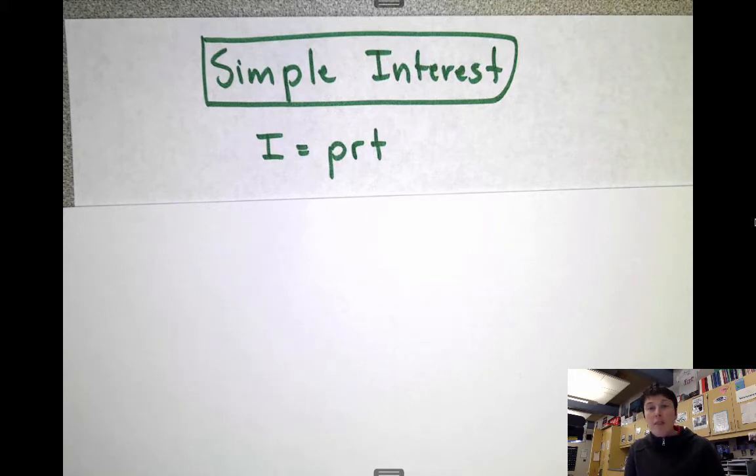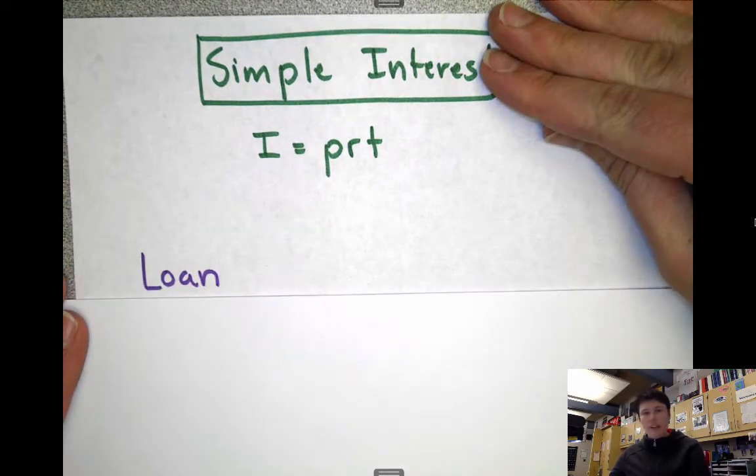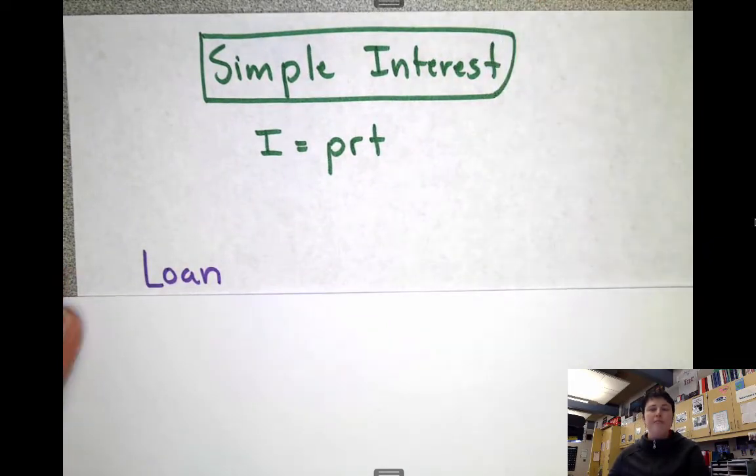But today I want to talk about loans, what a loan is. A loan is different than having a bank account. So we're going to write that word down, loan. What a loan is, is it's a way of borrowing money. So if you need to purchase or buy something big that you don't have the money for, like a car or a house, there's something you can do. You can borrow money from the bank. You can get what's called a loan.